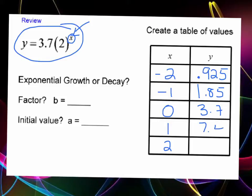Notice that when X equals zero this becomes zero and two to the zero power is one, so one times 3.7 is 3.7. You could verify these values with your calculator. Let's answer these three questions. Is this exponential growth or decay? We can look at the table and notice the Y values increase as we plug in X values. The number inside the parentheses is our growth factor, which is greater than one, meaning we have growth. The factor B is two, and the initial value is 3.7.